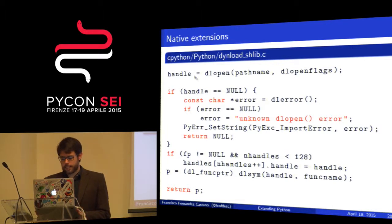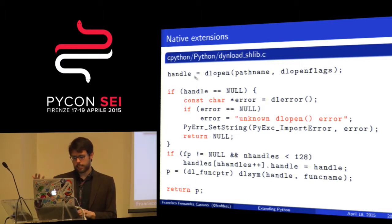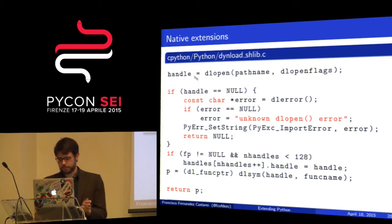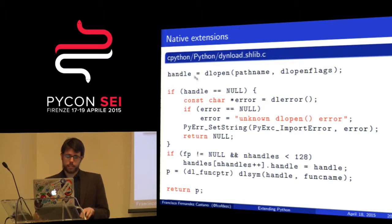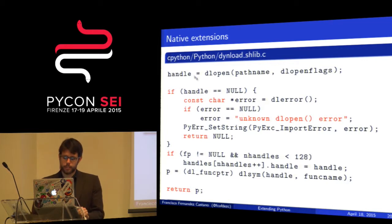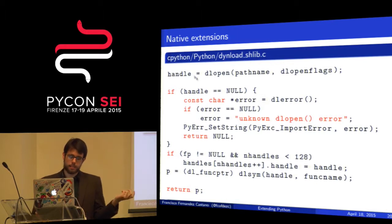Do you remember how we define a struct in ctypes? We have to create a class that inherits from a class defined in ctypes, use these underscore fields — it's a bit tedious. On CFFI, we can use C directly. For example, if we are dealing with files at the operating system level, we can go to the man page, copy the struct, paste it here, and use it. In this case I'm defining a Point struct with two float fields, and in two lines I can use the Point structure and interact directly with C.